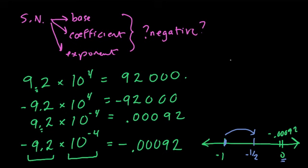So that's how we can think of that. But what about if everything's negative? And that's what the question here is asking. So we would have something like negative 9.2 times a negative 10 to the negative 4th.